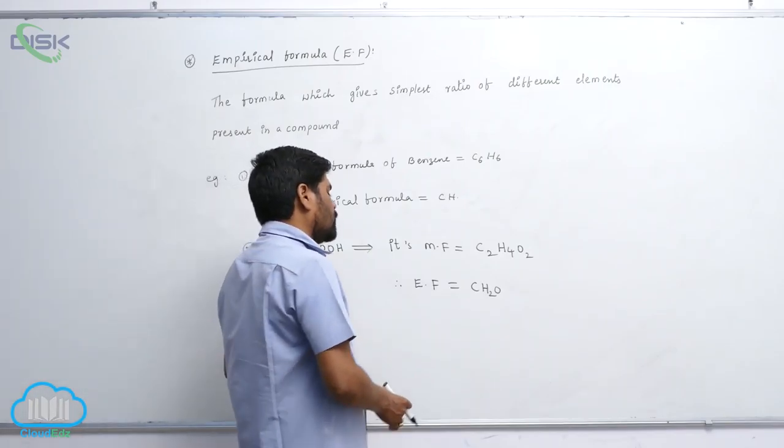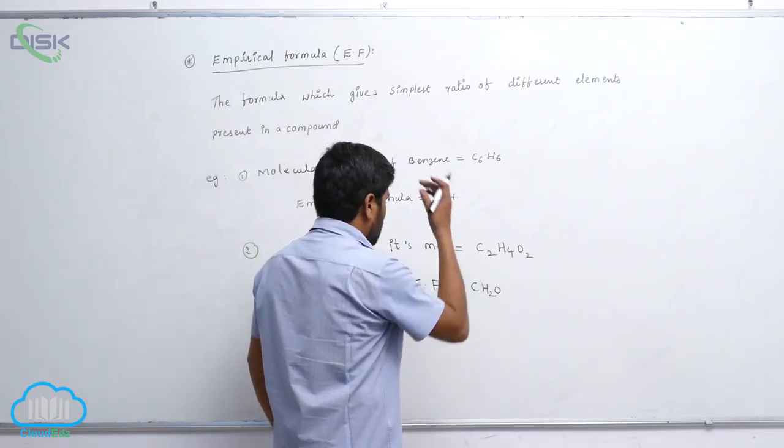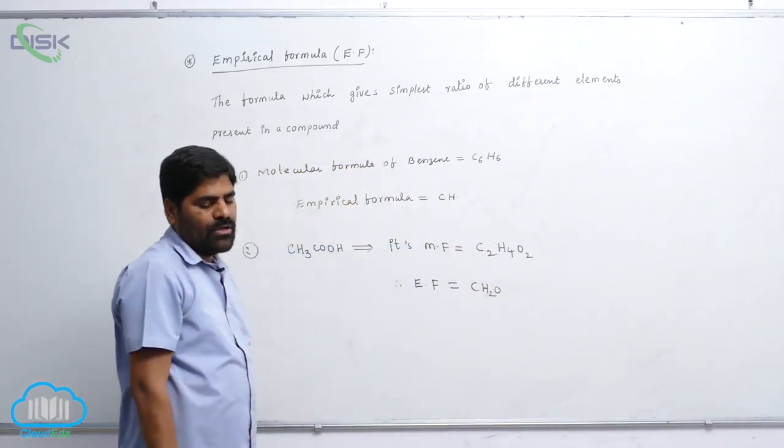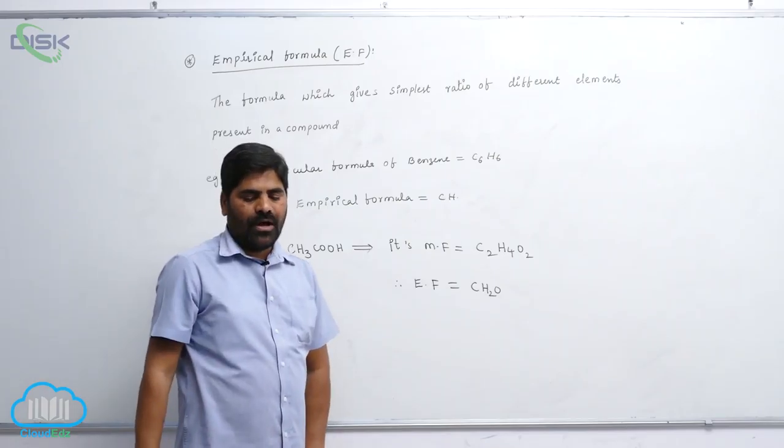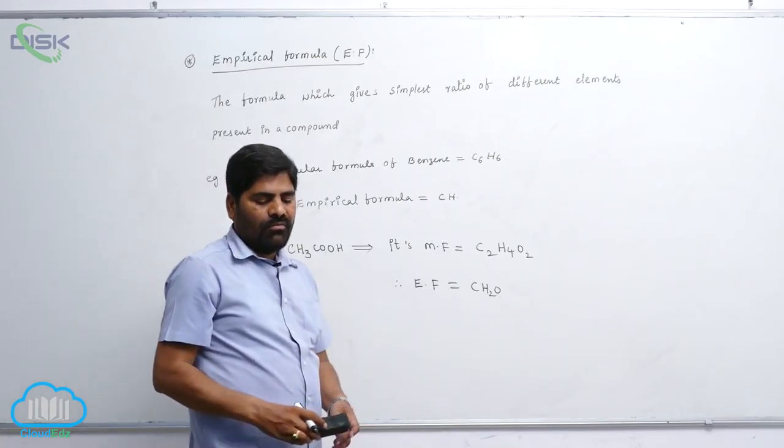So when this CH2O is multiplied with 2, when it is multiplied with 2, you get which one? The molecular formula. Okay. So this is about empirical formula and molecular formula.